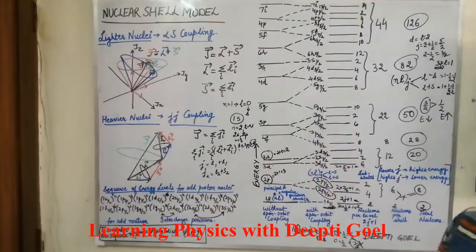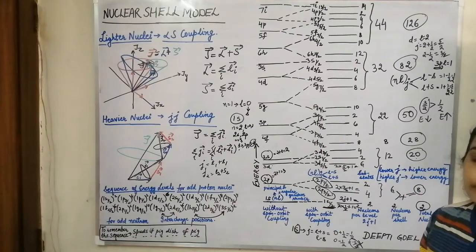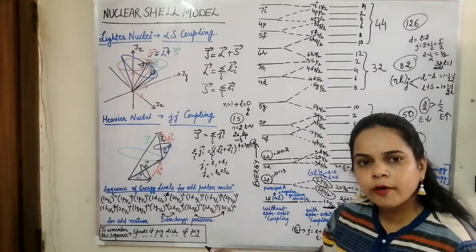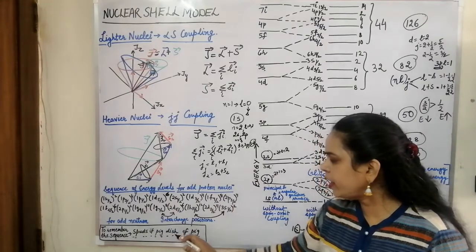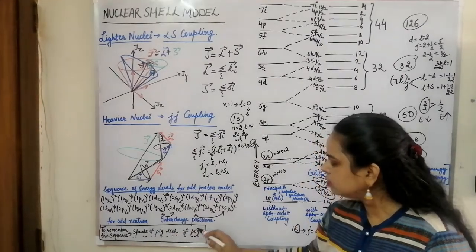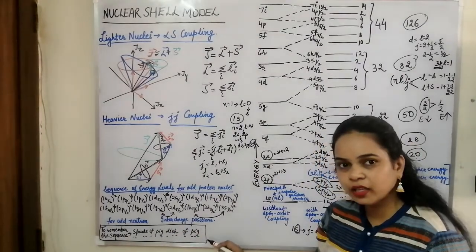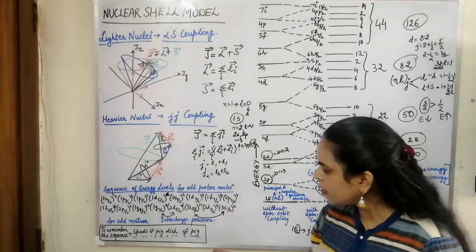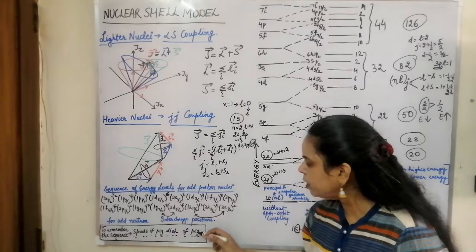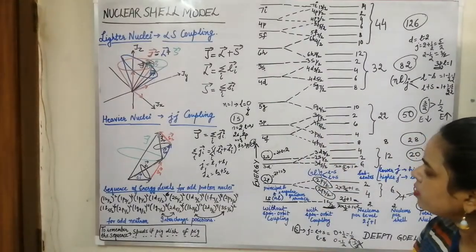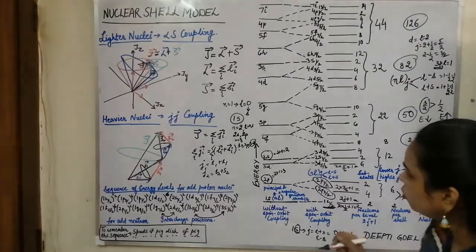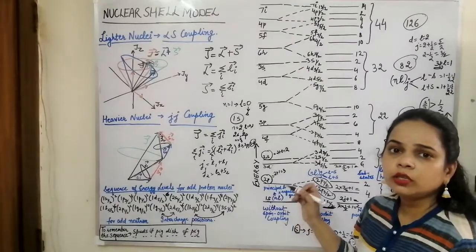There is always confusion about how to remember the sequence of energy levels. Always remember the mnemonic: 'spuds if pig dish of pig.' You have to omit all the vowels except the vowel in the last word 'pig.' If you remember this sequence, you can recall the energy level diagram very easily and will never write the wrong sequence.